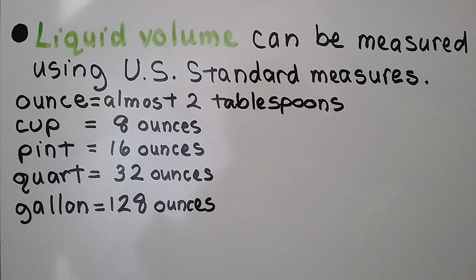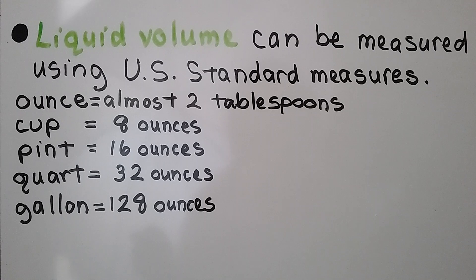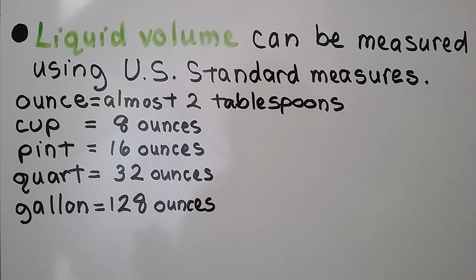Liquid volume can be measured using US standard measures. An ounce is equal to almost two tablespoons. A cup is equal to 8 ounces. A pint is equal to 16 ounces. A quart is equal to 32 ounces and a gallon is equal to 128 ounces.